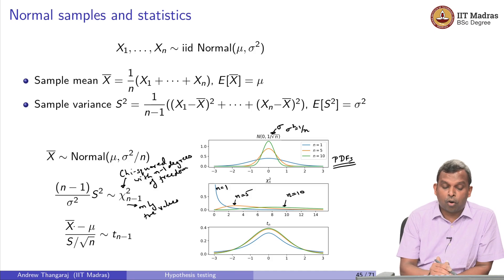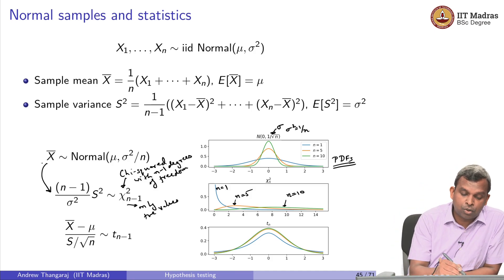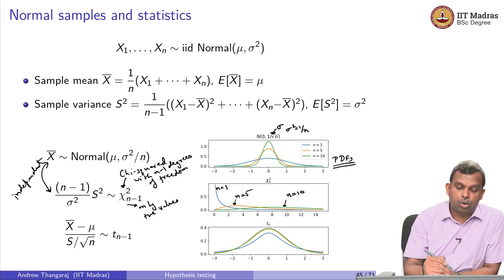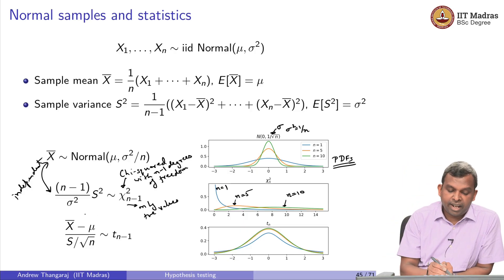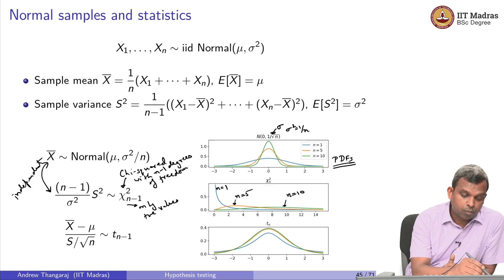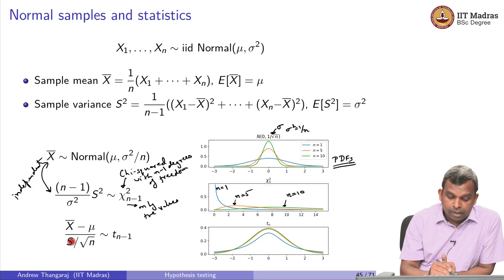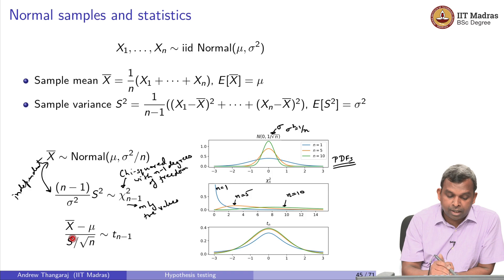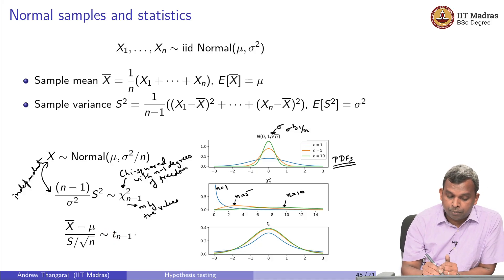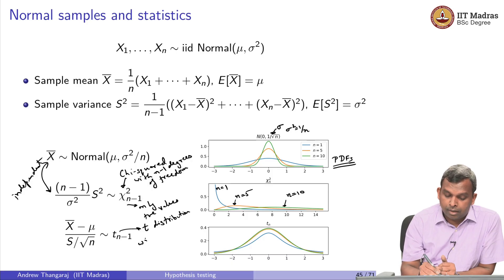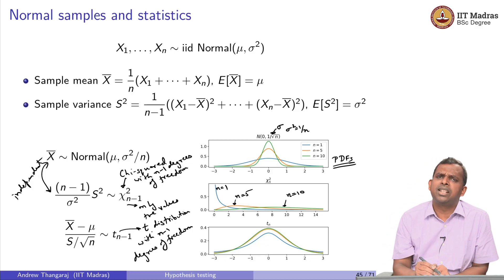Here is the next interesting result: x̄ and S² are independent — a non-trivial result to show. Not only that, there is a really strange and very interesting relationship. It says x̄ minus μ, divided by S/√n — where S is the sample standard deviation, a random variable — gives you something called the t-distribution, or Student's t-distribution, with n−1 degrees of freedom. Look up the history of Student's t-distribution if you are interested; it is a very interesting story.